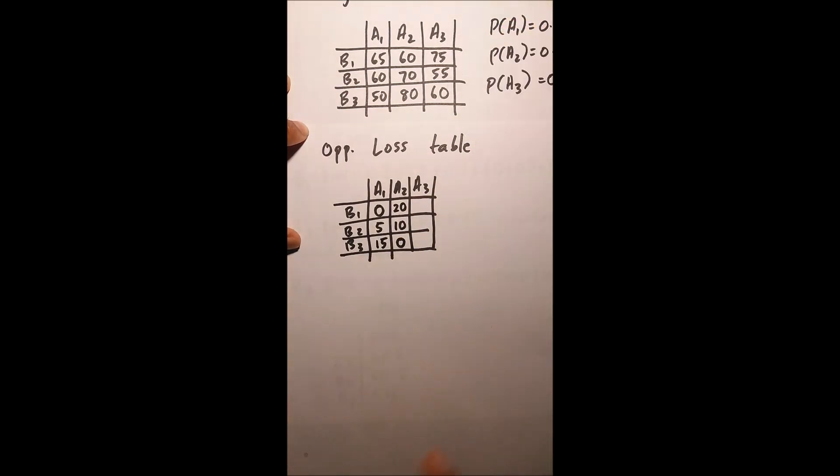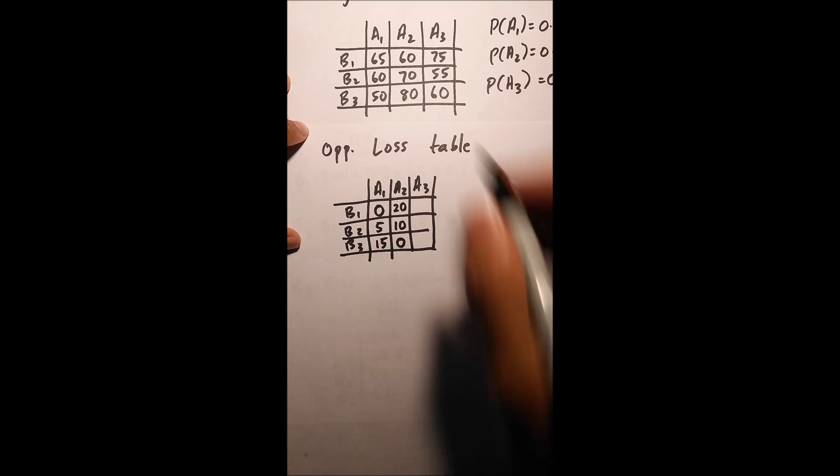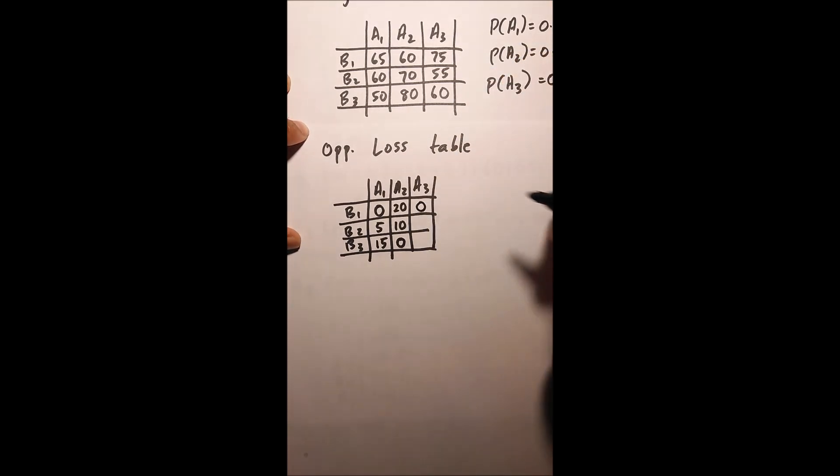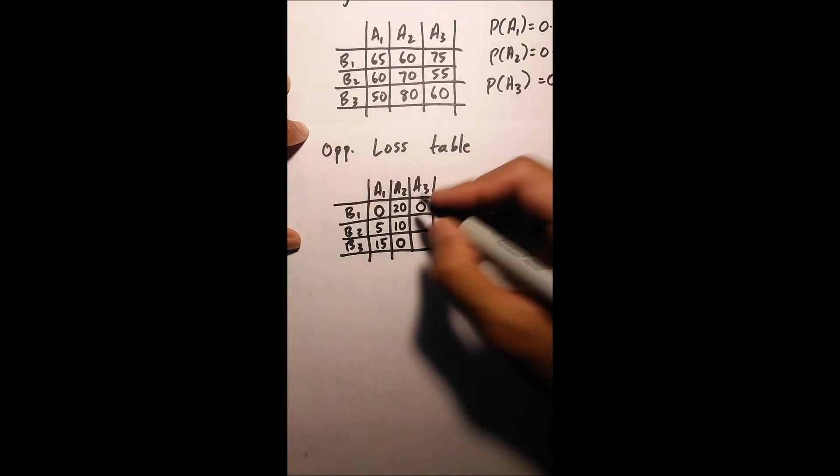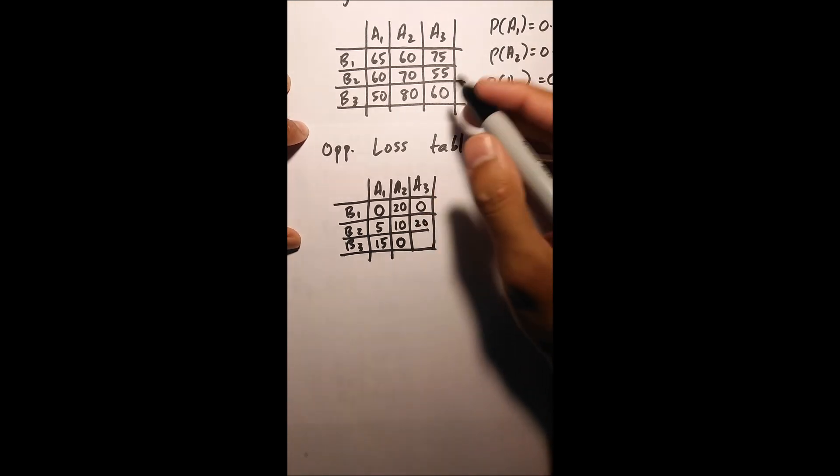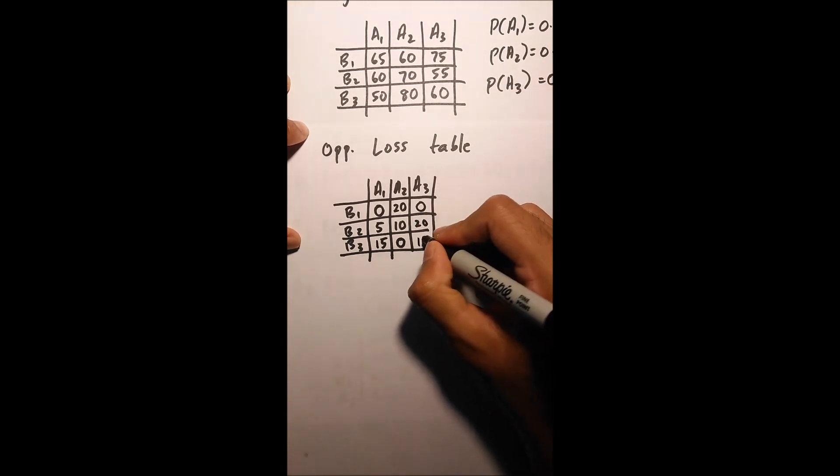Then I'm going to go to column number A3. My highest value in A3 is the first row, so I'm going to replace that with a 0. Then 75 minus 55 is 20, and 75 minus 60 is 15.